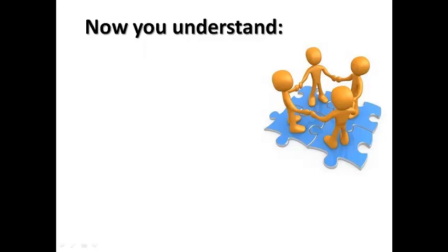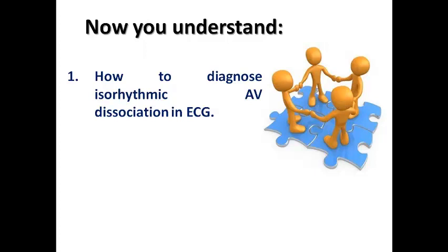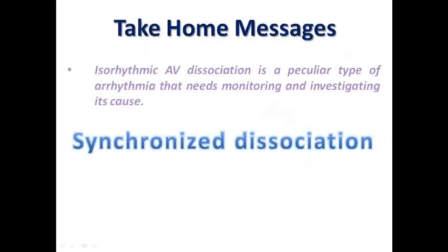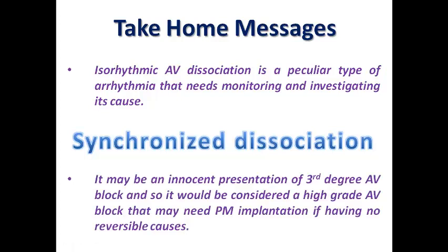In summary, we understand how to diagnose isorhythmic AV dissociation on ECG — it is uncommon but characteristic when seen, due to the wandering P-wave pattern around the QRS. In most cases it is a benign type of AV dissociation with no clinical significance, as seen in athletes. However, it may be an unusual presentation of third-degree AV block, representing synchronized dissociation that needs monitoring and investigation. If the treadmill test shows no acceleration of the ventricular rate, the patient may need pacemaker implantation. Thank you very much for listening.